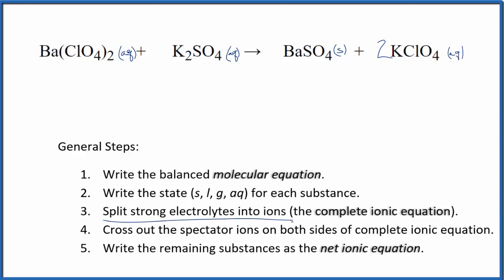Now we can split the strong electrolytes into ions, and that gives us the complete ionic equation. So barium's in group 2, that's 2 plus, and the perchlorate ion, the whole thing here, 1 minus, and we have 2 of those.